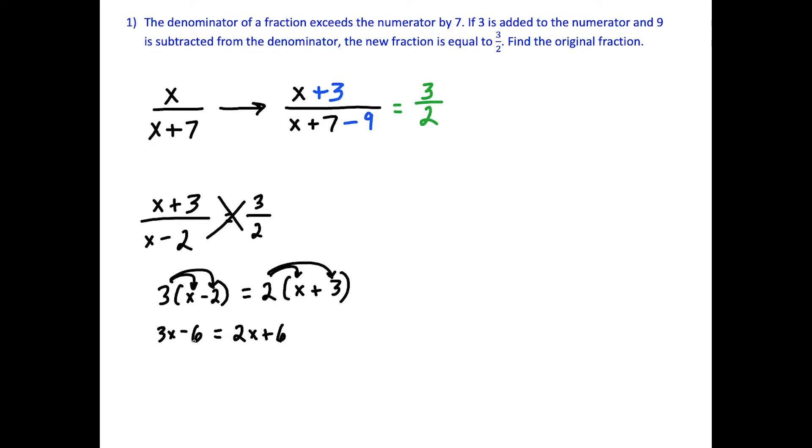So then to solve, we have x's on both sides, so we can move the 2x over by subtracting 2x. Now 2x minus 2x cancels. We have x minus 6 is equal to 6. And then to solve for x, we just add 6 to both sides. This is going to cancel out, telling us that x is equal to 12.